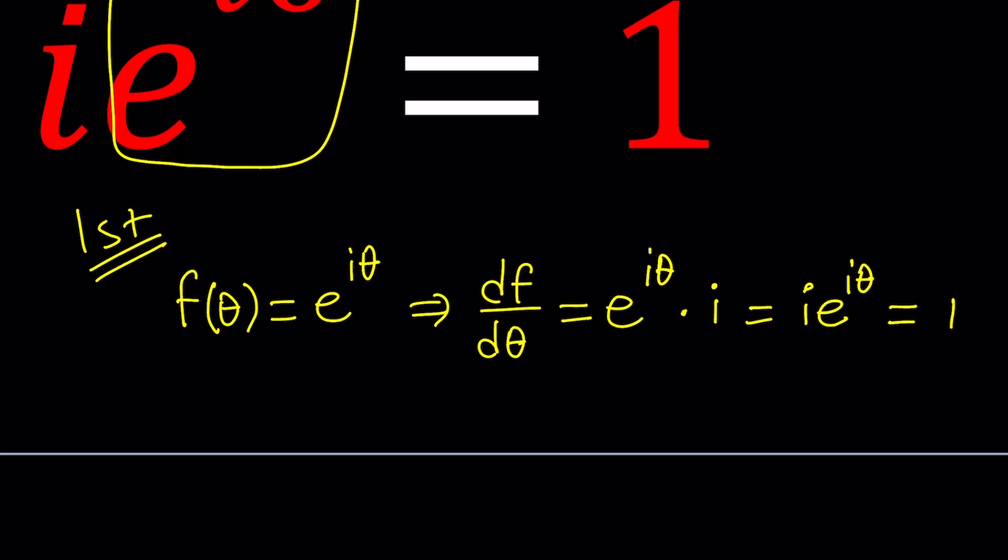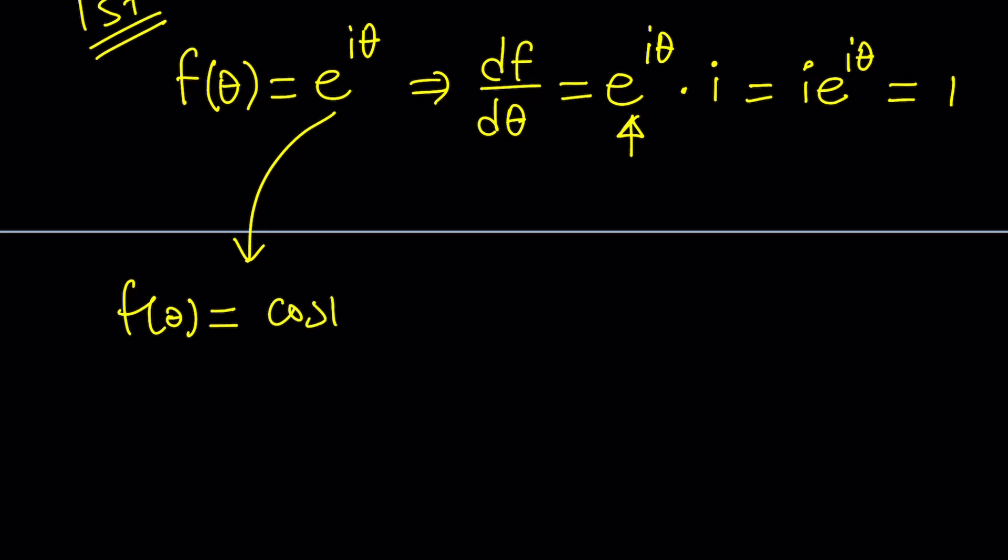Can I find f from there? First of all, I do know that the derivative of f contains e to the power iθ. And I actually know what f(θ) is because I can write it using Euler's formula. I can write this as cosine θ plus i sine θ.